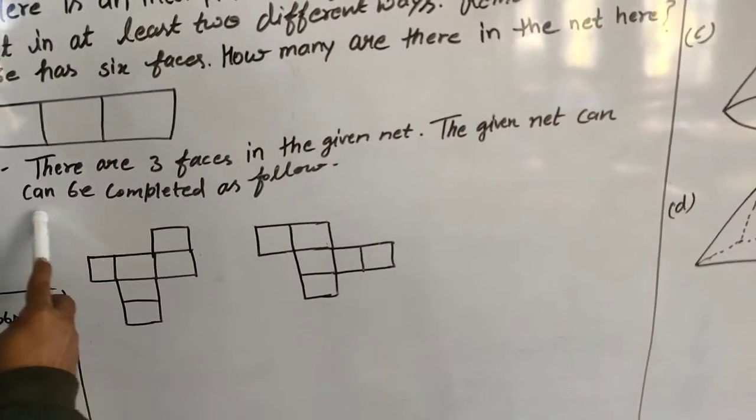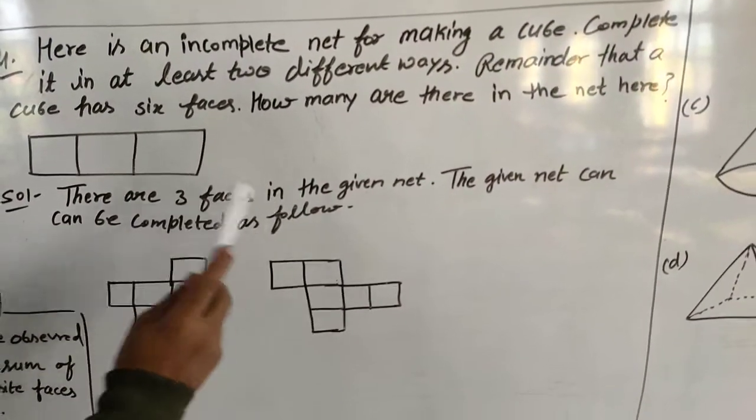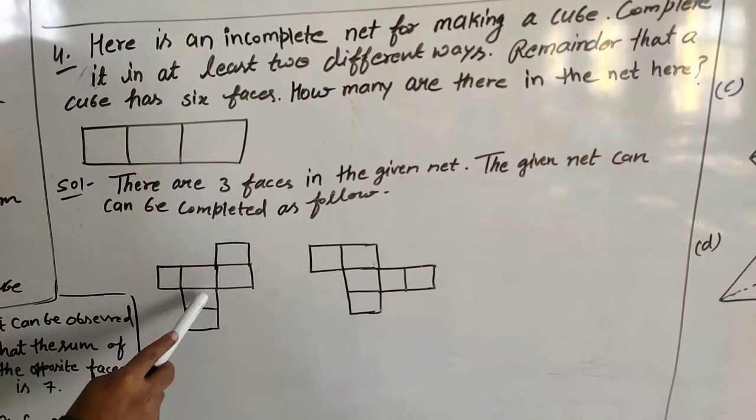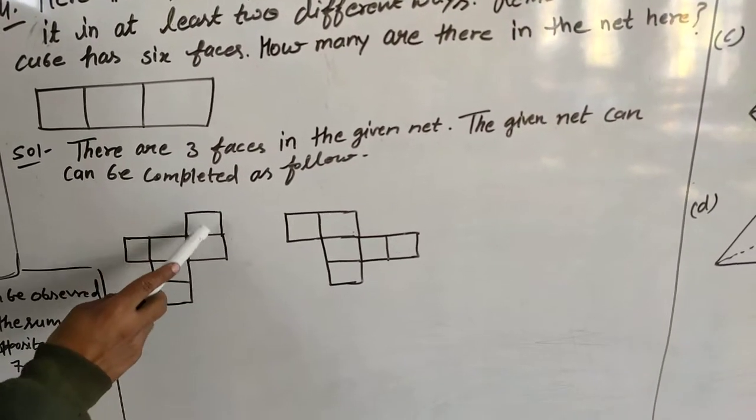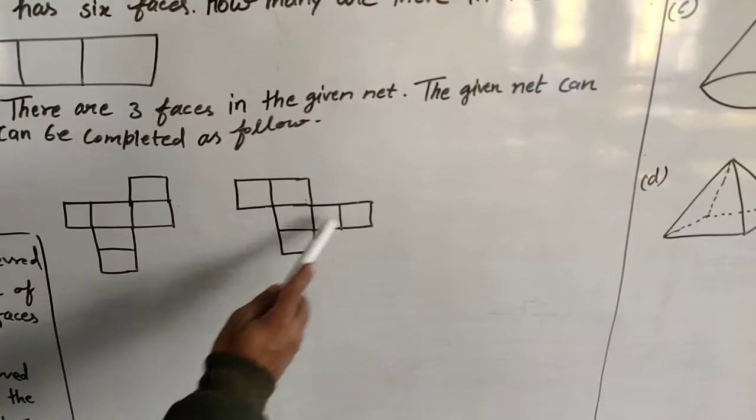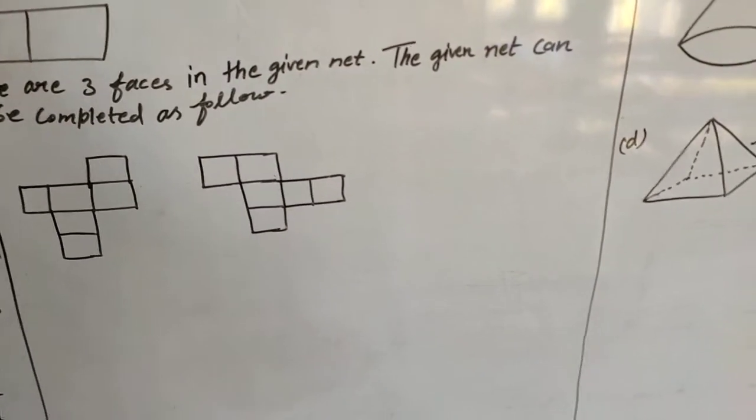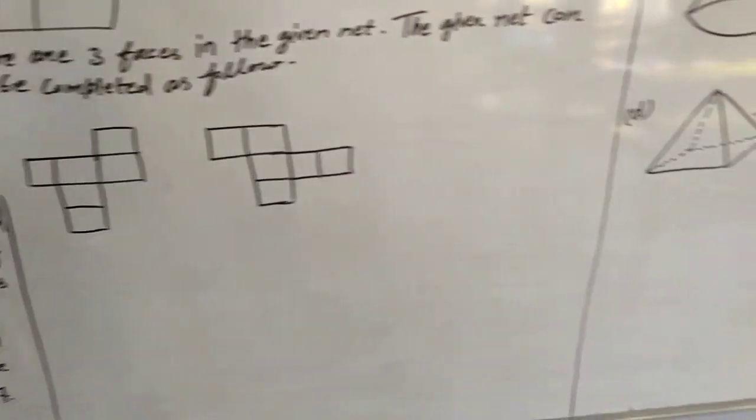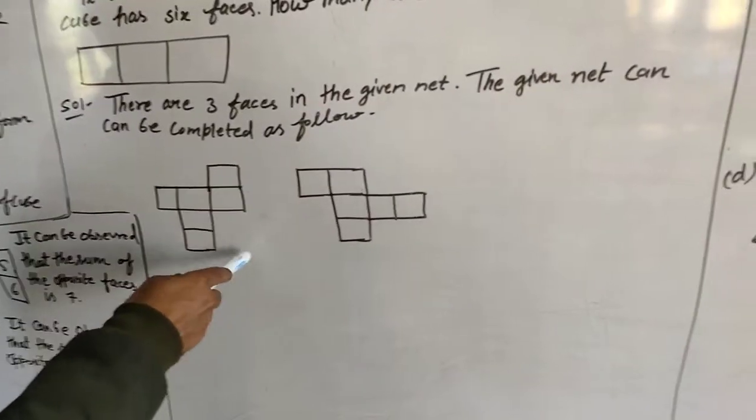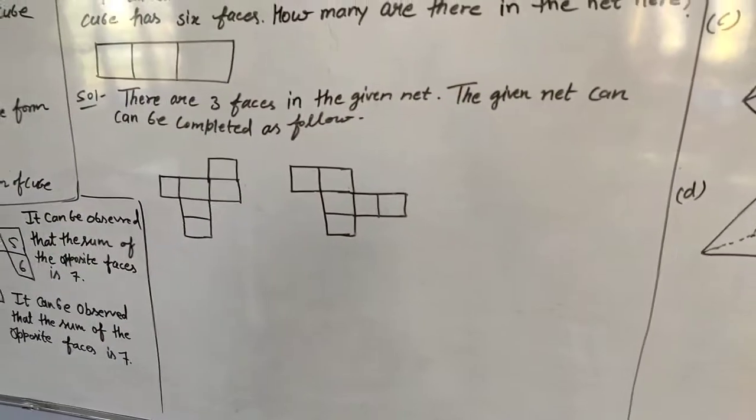The given net can be completed as follows: 3 is given, so we can add 3 more faces. So it is 6 faces: 1, 2, 3, 4, 5, 6. Both are in cube forms, cube nets in different ways. So you can make any other different way of forming a cube also.